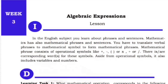For this video, I'll discuss Math 7 Module Quarter 2, Week 3, which is about algebraic expressions. In English, you learn about phrases and sentences — mathematics has mathematical phrases and sentences too. You have to translate verbal phrases to mathematical symbols. Mathematical phrases consist of operational symbols like plus, minus, parentheses, multiplication, and division, as well as variables and numbers.